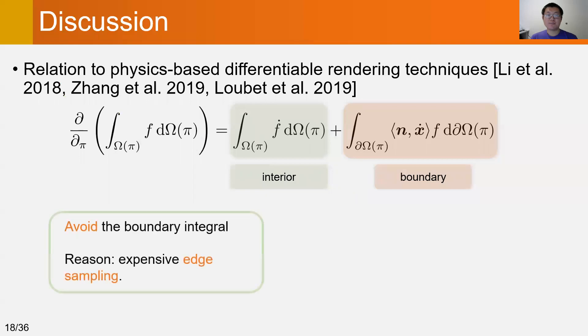Most physics-based differentiable rendering methods prefer to use a parameterization that can avoid the boundary term, because evaluating the boundary integral requires an extra expensive edge sampling.